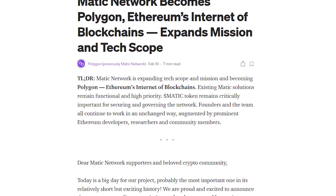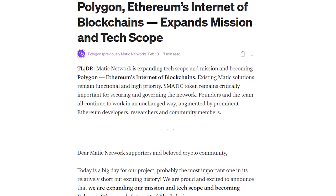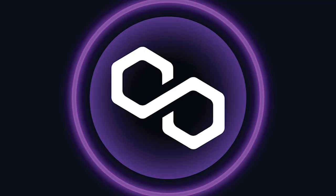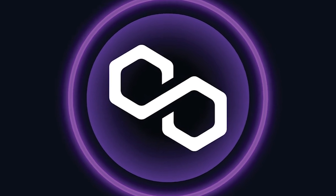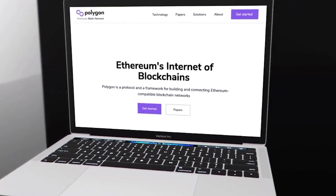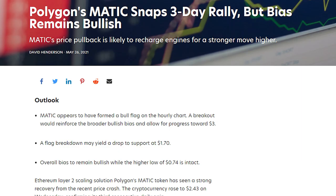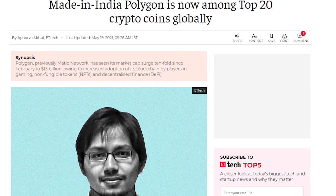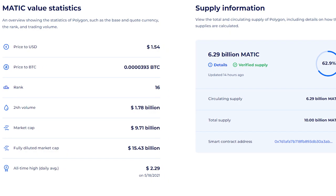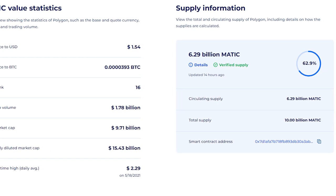In February 2021, Matic announced their expansion for Mission and Tech Scope and Becoming Polygon, Ethereum's Internet of Blockchains. But is that all to the news?